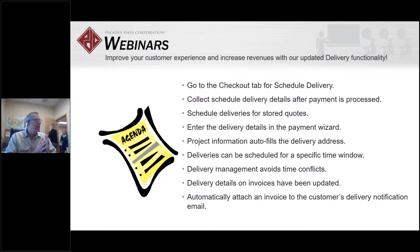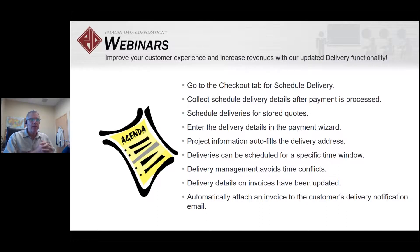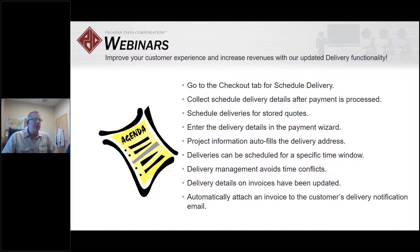We've changed where the delivery scheduler button is — moved it from the invoice screen to the checkout screen. Scheduled delivery details are collected later on in the checkout process. We've also added the capability to run scheduled delivery for stored quotes, on holds, and special deliveries — that was kind of the reason we moved that button. When you enter the delivery details, project information can autofill the delivery address, giving you another way to increase efficiencies.